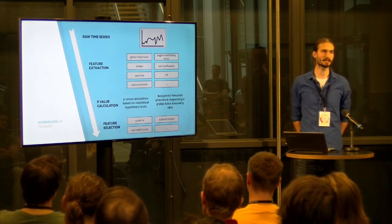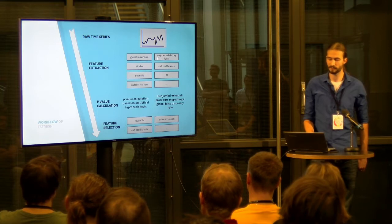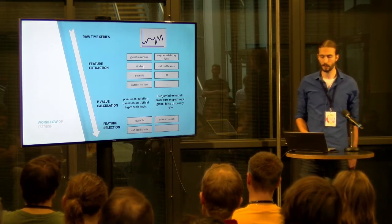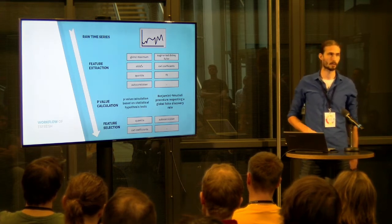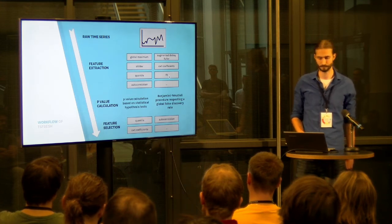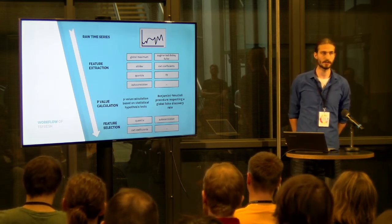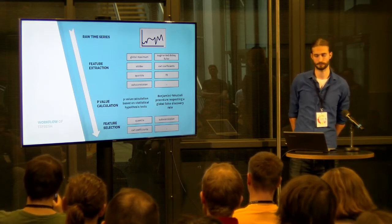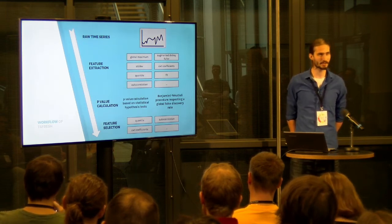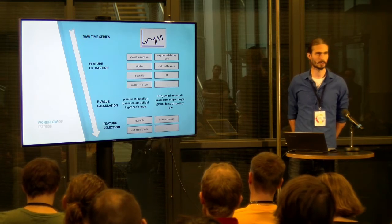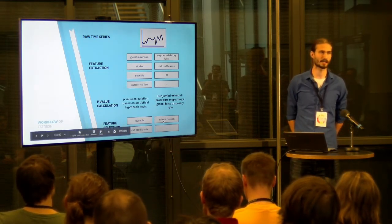We start with raw time series data in pandas DataFrame format, then do feature extraction. We have a library of more than 60 feature extractors over different parameters, all run in parallel on the time series you feed in. You end up with features like the global maximum, standard deviation, but also more complicated ones like features from the Fast Fourier Transform, wavelet transformations, and so on. With all these features, we then do a hypothesis test — we calculate the p-value to determine if each feature is relevant to the target. After calculating a p-value for each feature, we perform the Benjamini-Yekutieli procedure, which throws out all irrelevant features respecting a global false discovery rate that you can set. You end up with only the features that are relevant to your target.